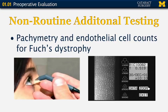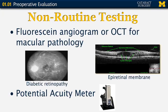There are some non-routine additional tests that might be indicated. That would be pachymetry or endothelial cell counts for Fuchs corneal dystrophy. Also non-routine testing would be fluorescein angiography or optical coherence tomography for macular pathology. This could be used in macular degeneration looking for choroidal neovascularization, diabetic retinopathy, checking preoperatively for macular edema, or something like an epiretinal membrane. We'd want to know prior to cataract surgery whether any edema is present.